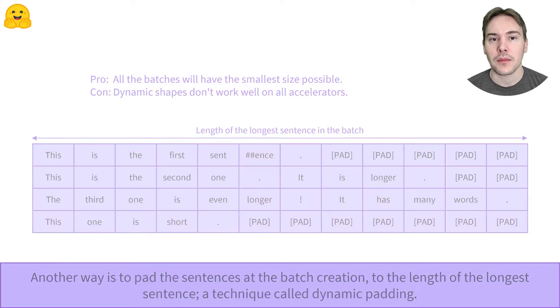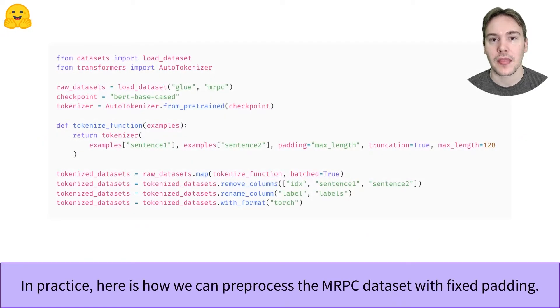Let's see how to apply both strategies in practice. We have actually seen how to apply fixed padding in the datasets overview video. When we preprocess the MRPC dataset, after loading the dataset and tokenizer,